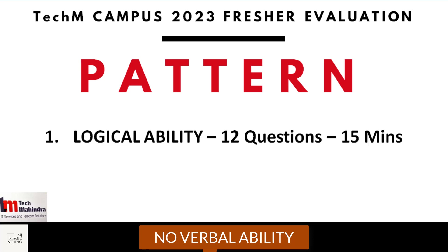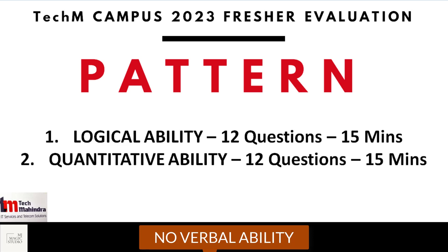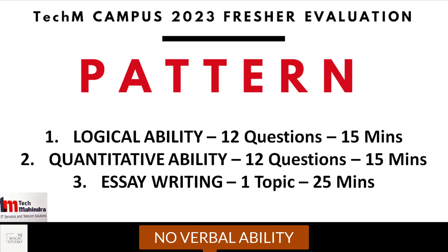We will be taking up the 12 questions that need to be answered, but before that let's complete what the next sections are. Following logical ability is numerical ability — or quantitative ability advanced, as they call it. Again 12 questions for which 15 minutes is given. Once this section is over, the next section would be essay writing, where one topic is given for which 25 minutes is given.